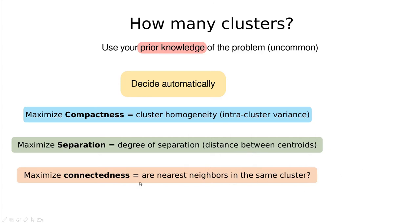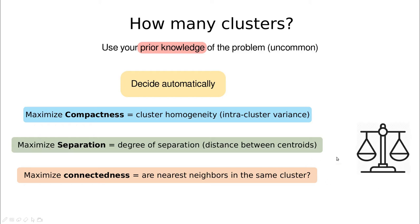The third criterion, which is not so obvious, is to maximize connectedness — meaning that nearest neighbors are in the same cluster. Sometimes two points are pretty close together but belong to different clusters because of the initialization or the number of clusters, and this is bad. Of course we have to balance these criteria, and typically separation and connectedness pull in different directions, so balancing them is hard.